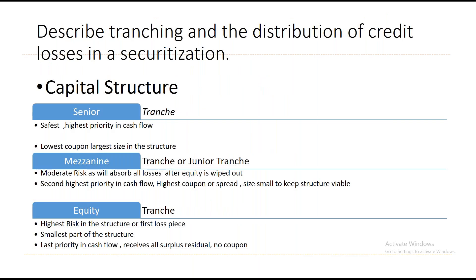Describing tranching and the distribution of credit losses in a securitization: this is a pictorial representation of a securitization waterfall structure. The senior tranche is at the top, mezzanine in the middle, and the equity tranche at the bottom. The senior tranche is the safest and gets the highest priority in cash flow. Since it is safe, as part of the risk-reward structure, it has the lowest coupon but will be the largest size in the structure.